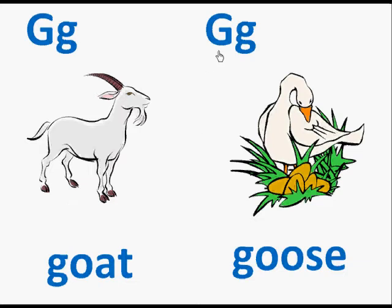Here we have the capital letter G, the small letter G, a picture of a goose. Here's the word goose. The letter G makes the sound guh. So we'll read this page: G, goose, guh guh guh.